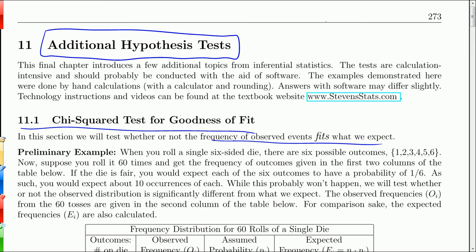We will also do a chi-squared test of independence, where we determine whether or not two variables are independent or associated.